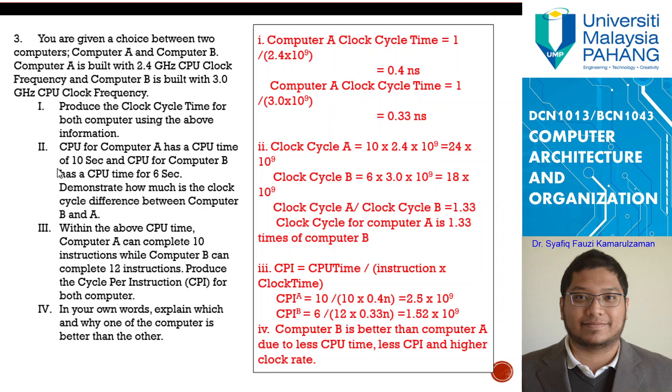Next we go towards number 2. CPU for computer A has a CPU time for 10 seconds, and CPU for computer B has a CPU time for 6 seconds. Demonstrate how much is the clock cycle different between computer B and A. In this case, you have the clock cycle A.